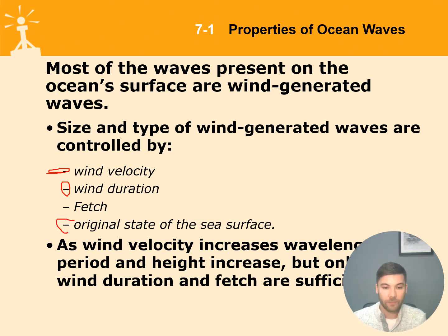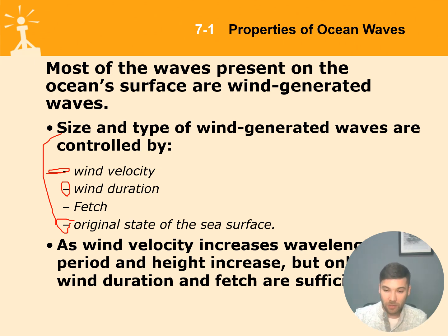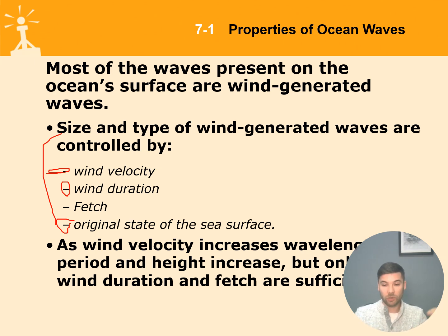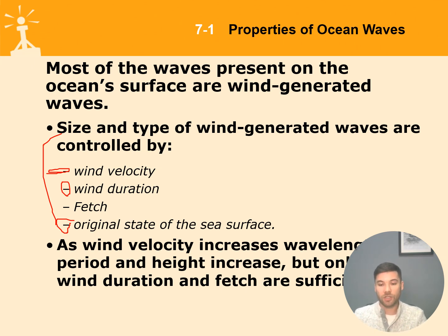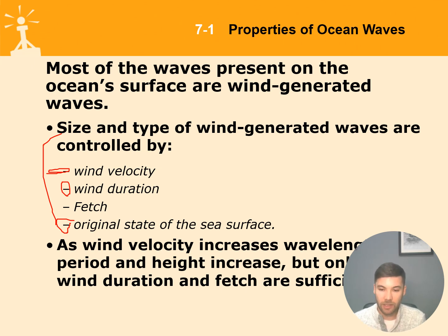The third factor impacting wave size and type is the original state of the sea surface. If the water surface was stable when the wind started blowing, it will impact the size differently than if there was already swell, which results in much more efficient energy transfer. As wind velocity increases, all wave parameters grow because the waves receive more energy. The current state of the sea tells you a lot about the amount of energy shared from the wind.